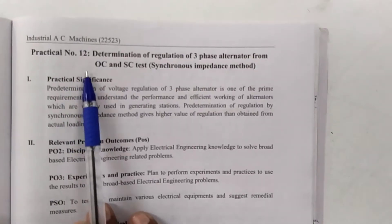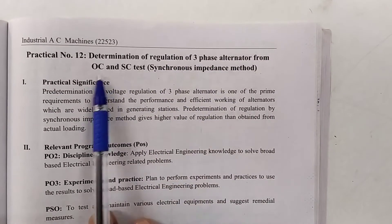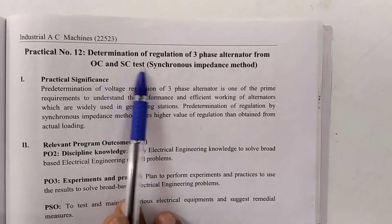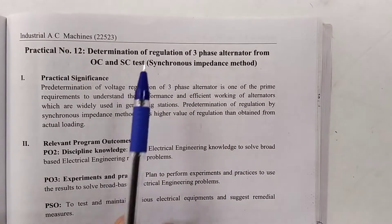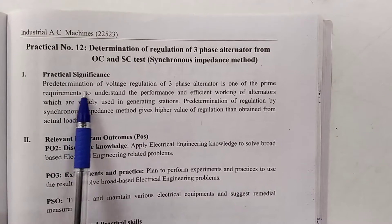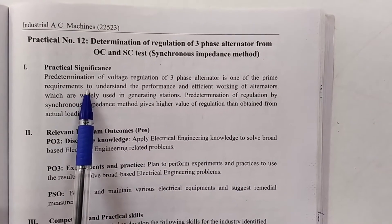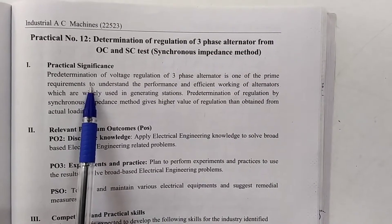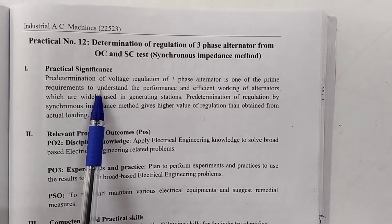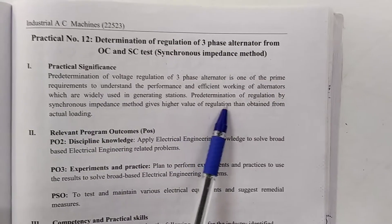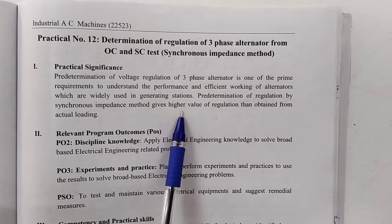The title is already described: Determination of regulation of a 3-phase alternator from open circuit and short circuit test — Synchronous Impedance Method. The practical significance is that a 3-phase alternator is commonly used in generating stations as a source for various industrial and commercial applications. Its predetermination of regulation by the Synchronous Impedance Method gives a higher value of regulation.